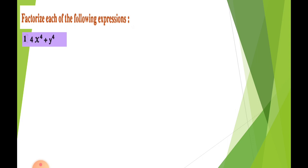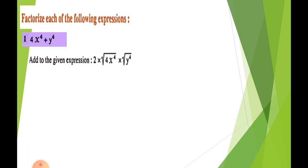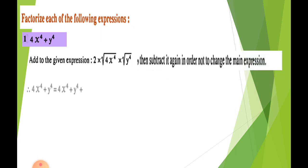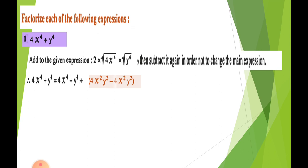Example one: factorize 4x⁴ + y⁴. We cannot factorize this expression in its current form, so we change the form without changing the value. We add and subtract two times the square root of 4x⁴ times the square root of y⁴. So we write: 4x⁴ + y⁴ = 4x⁴ + y⁴ + 4x²y² − 4x²y².